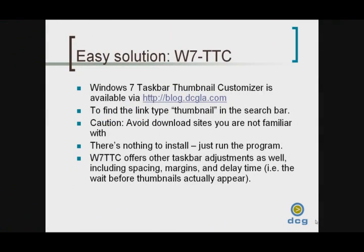So just to summarize, in order to download the Windows 7 Taskbar Thumbnail Customizer, simply visit blog.dcgla.com. Once you're on the site, it's easiest to find the article you're after by typing the word thumbnail in the search bar. That'll bring up the relevant thumbnail related articles, and the one that you want will be the first one.